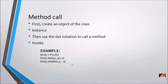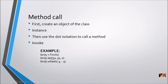So how do we use the methods — what does a method call look like? First, you have to create an object of the class, which is really called an instance. Once you have an instance, you use dot notation to call the method. In proper programming language, it's called invoking a method. In the Finch example, I created an instance called birdie, then used dot notation — birdie is invoking the LED method and the wheels method.